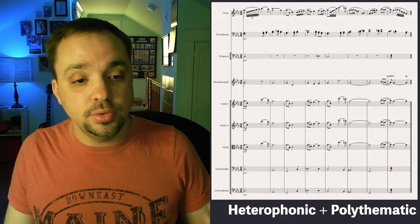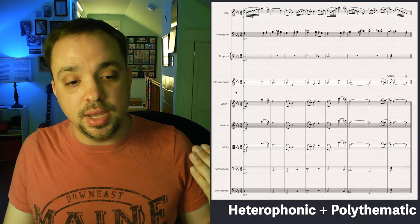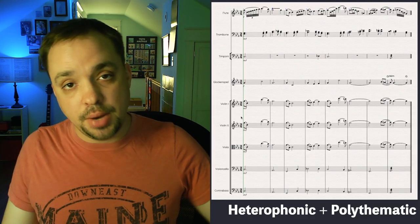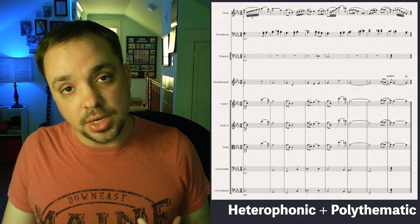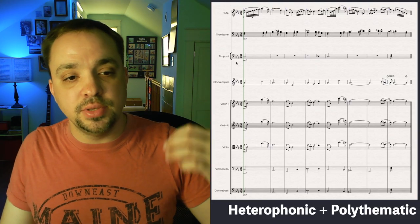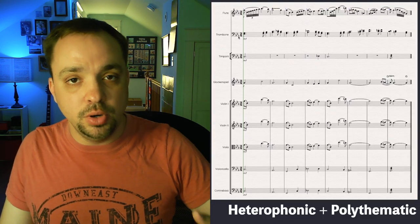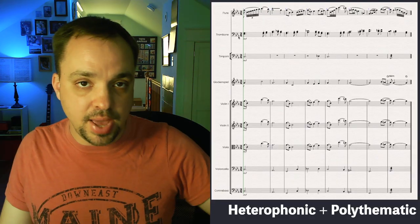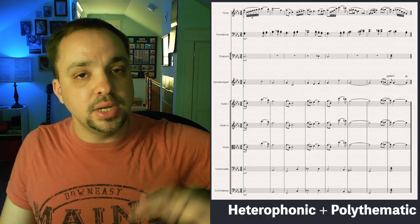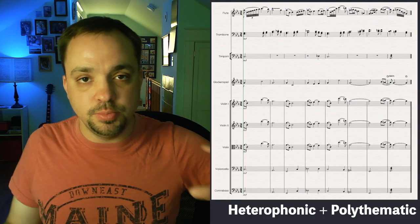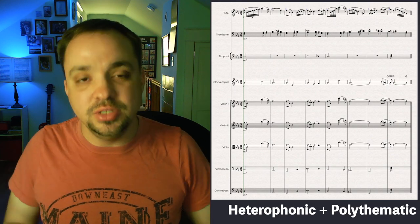If we look at the flute, the glockenspiel, and violin one and violin two, that's coming from the heterophonic texture — our main melody and just variations of it happening at the same time. And then the lower strings, the timpani, and the trombone were in our polythematic texture — these other ideas happening not quite in contrast, but also not quite in unison or in unity with our main melody either.